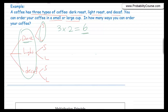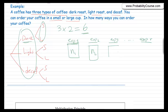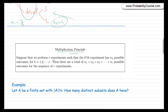The multiplication principle says that if you are doing experiments sequentially — experiment one, experiment two, experiment three, up to R experiments — and there are N1 possibilities for the first experiment, N2 options for the second, N3 for the third, and so on up to Nr for the last, then the total number of ways you can do these experiments is N1 times N2 times N3 times Nr. So the multiplication principle states that if we perform R experiments such that the k-th experiment has Nk possible outcomes, then there are N1 times N2 times N3 and so on possible outcomes for the sequence of R experiments.